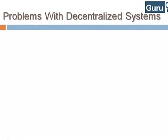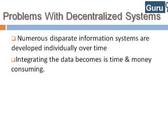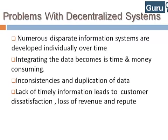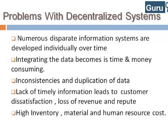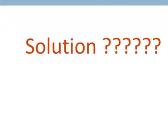Some major problems with the decentralized system are: numerous disparate information systems that are developed individually over time and are difficult to maintain; integrating the data is time and money consuming; inconsistencies and duplication of data; lack of timely information leads to customer dissatisfaction, loss of revenue, and reputation; high inventory, material, and human resource costs. These are just some of the major drawbacks for which we need a solution.